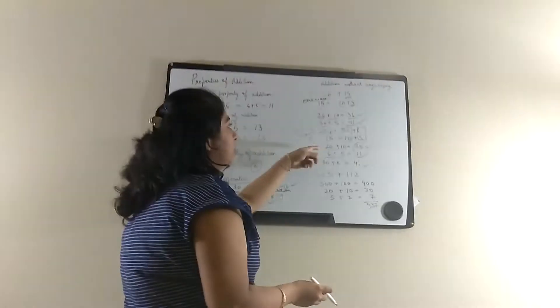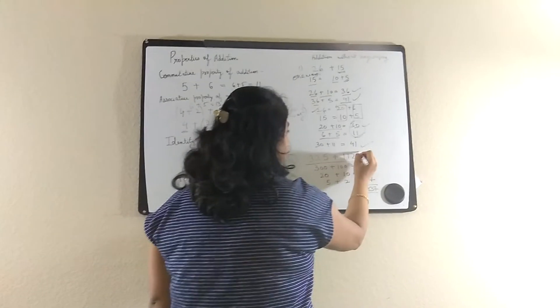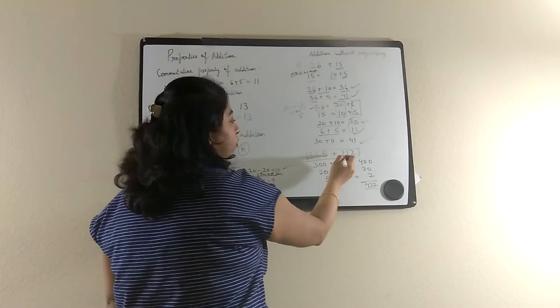So the much easier way is this way. Let's do another example with hundreds: 325 plus 112.